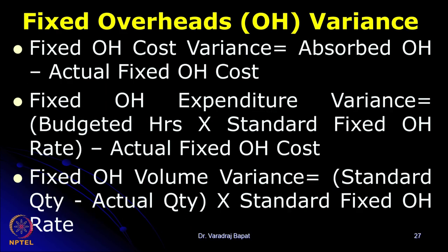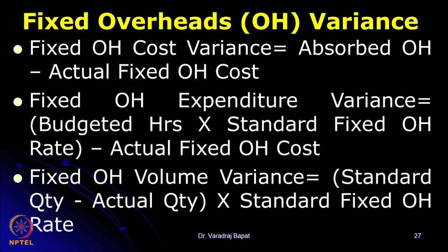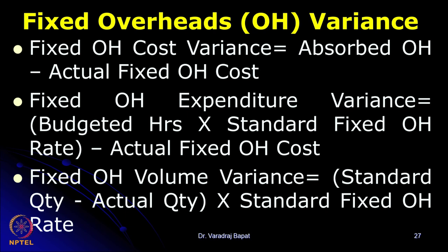Now let us go to fixed overhead variance. Fixed overhead cost variance is the absorbed overhead or standard overhead minus actual overhead. The expenditure variance is budgeted hours into standard rate (the budgeted amount) minus actual overhead amount. Volume variance is due to more or less quantity: standard quantity minus actual quantity, multiplied by standard rate. This is the breakdown of fixed overhead variance.